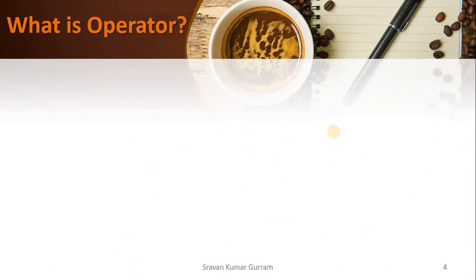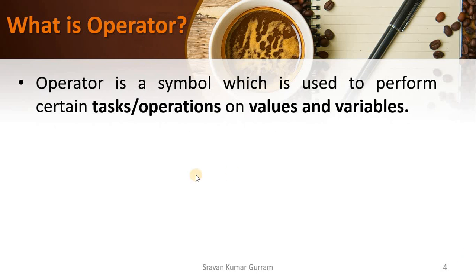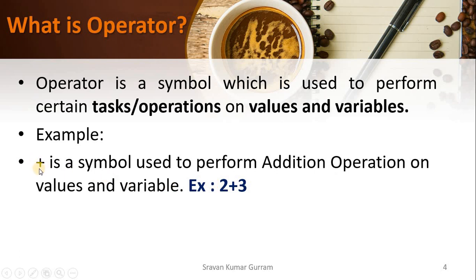First, let us try to understand what is an operator. An operator is a symbol which is used to perform certain tasks or operations on values and variables. We can say it is a symbol that we use to perform a particular operation. For example, the plus symbol — we use that symbol to perform addition operations in Java, such as 2 + 3, where the plus symbol is the operator.